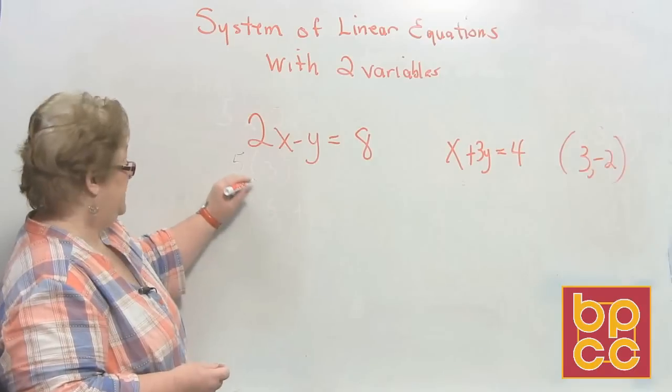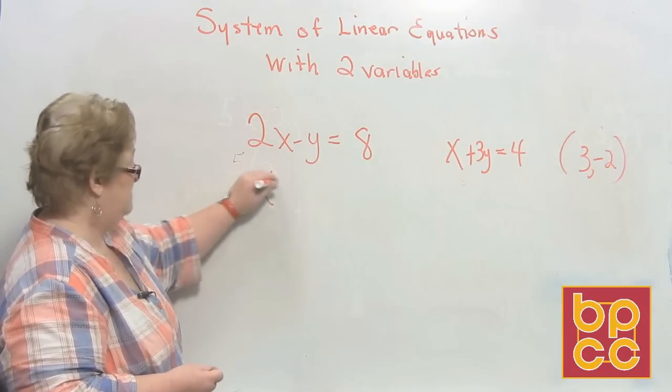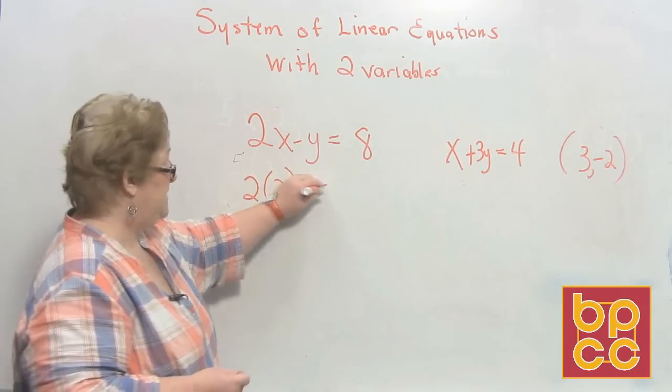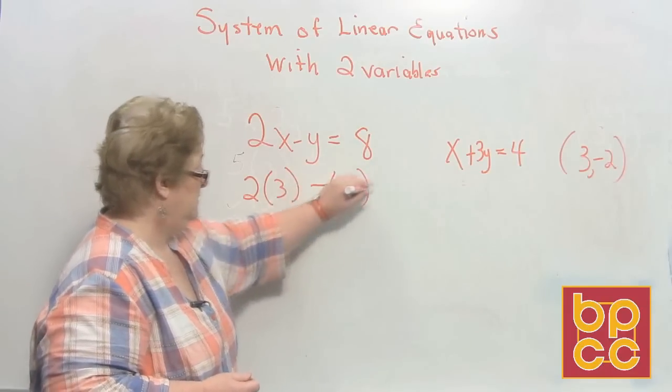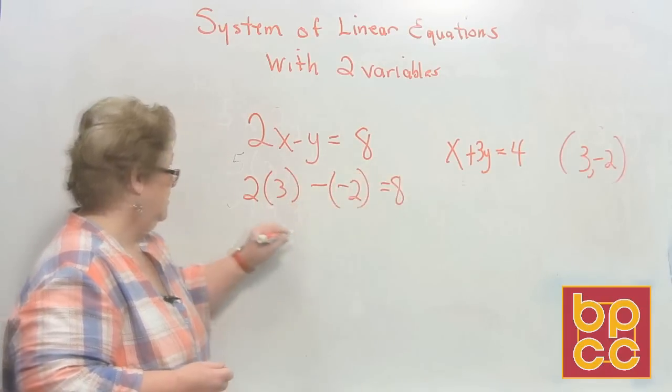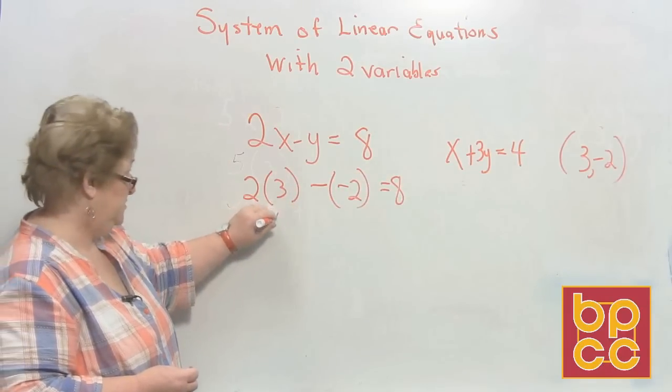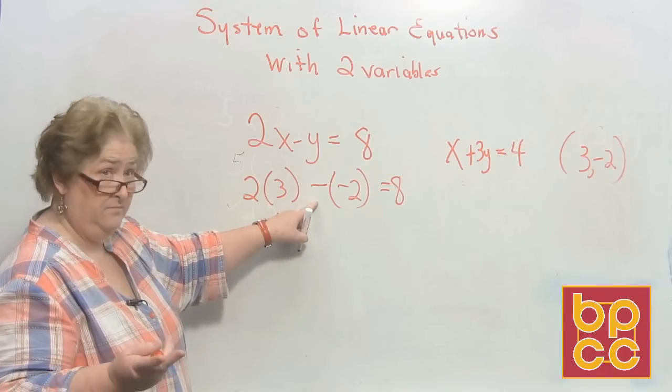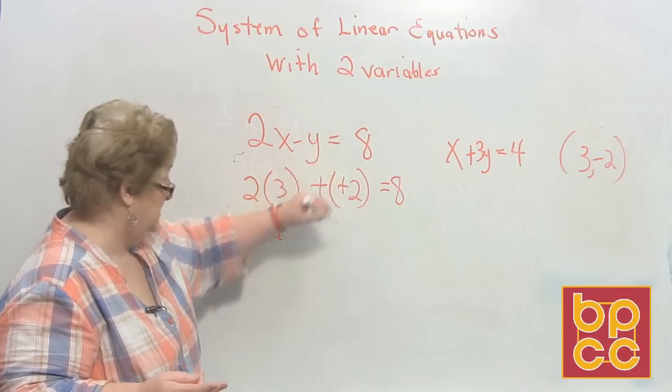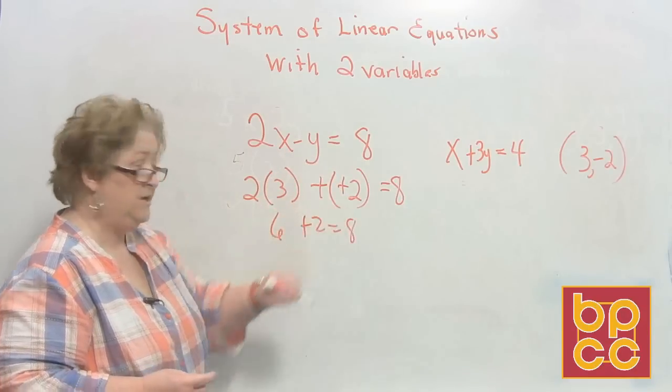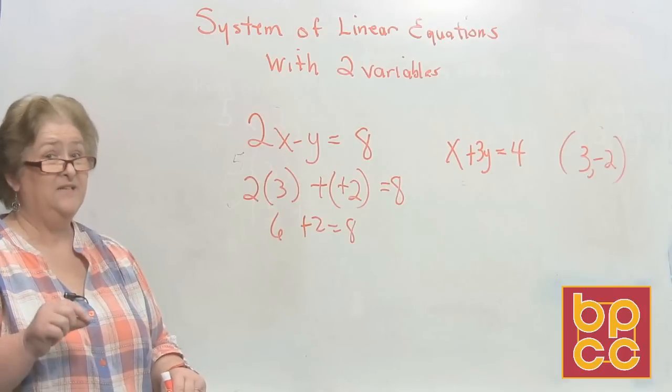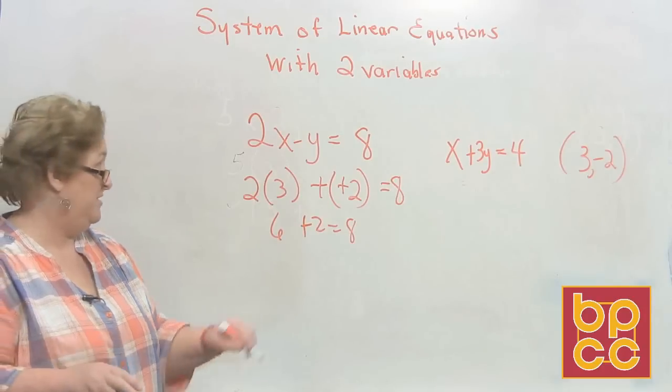We're going to substitute x. 2 times 3, there's a minus sign before the y, that's negative 2 equals 8. 2 times 3 is 6, keep, change, add the opposite, so 6 plus 2 does equal 8. So it works on this one, but let's see if it is a solution for both of them.